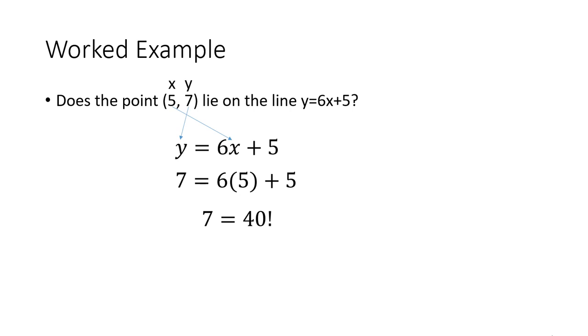So obviously, the point (5, 7) does not lie on that line. So the conclusion is the point is not on the line. If they were equal, it would be on the line, but they're totally different. So it's not on the line.